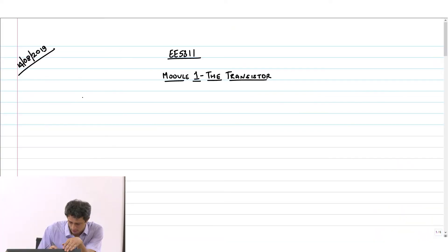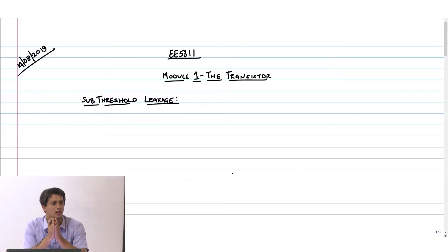Last class we stopped with the discussion on sub-threshold leakage. We said that the NMOS transistor can behave almost like a BJT because the drain and source are so close to each other that the channel is so thin. If you remember, for BJT action the base has to be very thin.